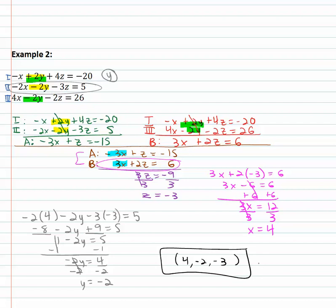We found this solution by picking a variable and eliminating the same variable twice. This gave us two equations with two variables, which we could solve completely.